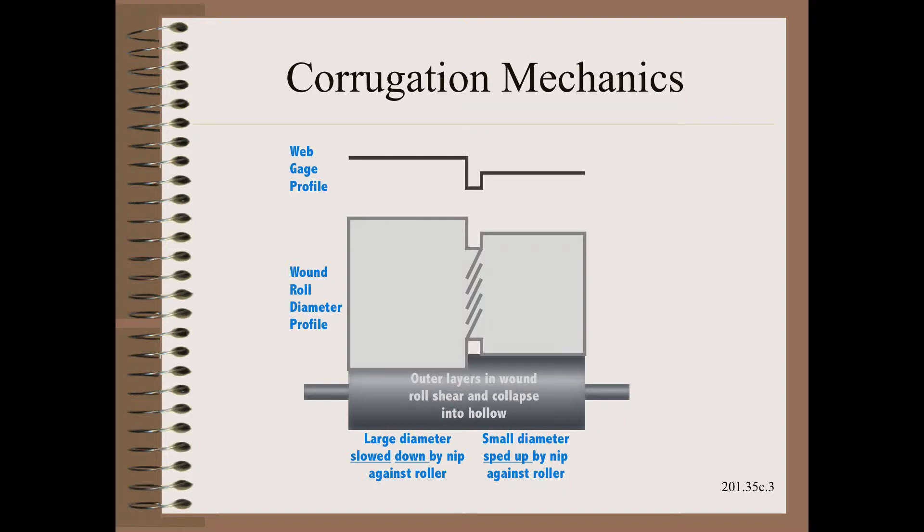The mechanics of a corrugation were covered in great detail in Web 101. Recall that the thickness profile of high, low, medium makes a corresponding wound roll diameter profile of high, low, medium.